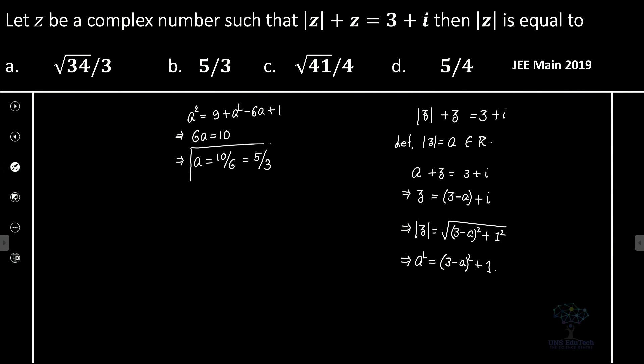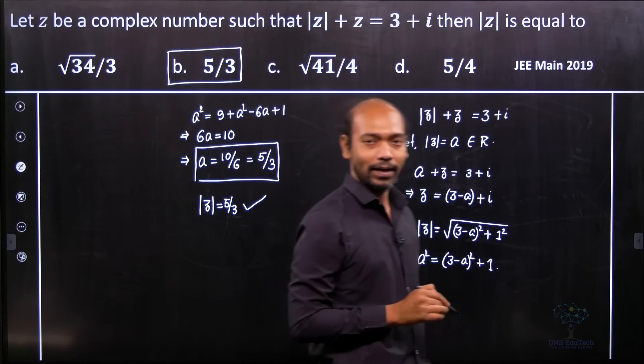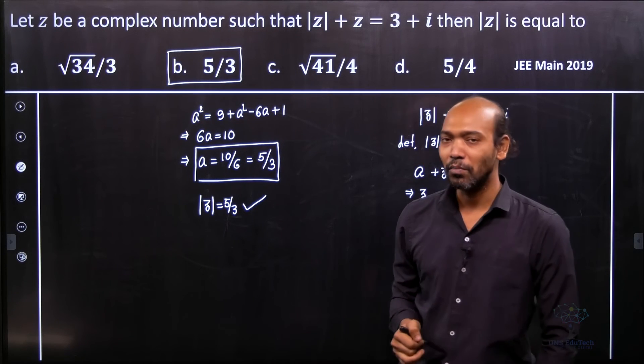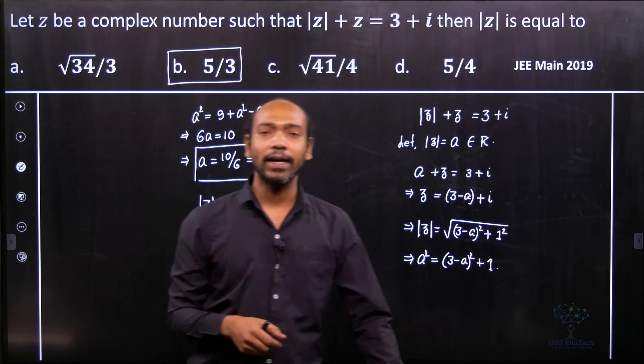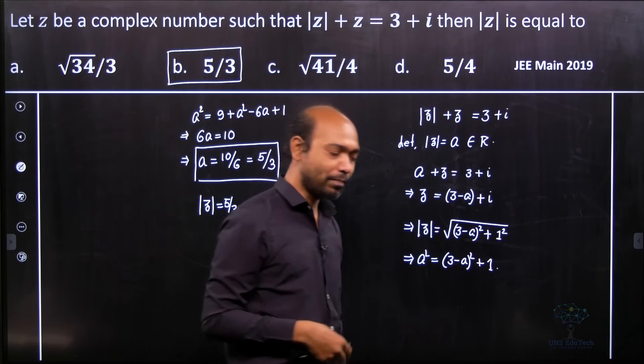So that's it. For this particular problem, the modulus of z is definitely 5 by 3. So for this problem, option b is the correct answer, which is a very simple problem. This simple thing came in 2019 JEE Main paper.